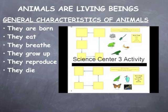This is a picture of the activity you will complete at Science Center 3. This picture will be opened on a program called Kidspiration. You will have to drag the pictures into the yellow boxes to illustrate the correct order of the life cycle for a frog and a butterfly.